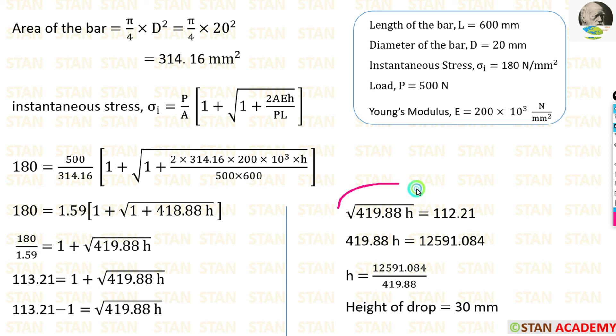Here we can take square on the left and right side. When we take square on the left side, square root will be eliminated. When we square 112.21, we will get this value. Now we can take this value on the right side, it will come in the denominator. Finally, we are getting height of the drop is equal to 30 mm.